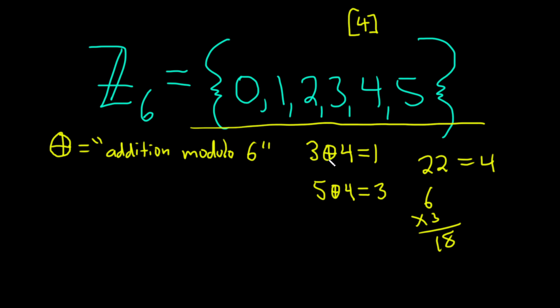But it also agrees with common sense division, right? If you have 3 plus 4, you get 7. The remainder is 1 after 6 goes into it. 5 plus 4 is 9, the remainder is 3 after 6 goes into it. So this is called addition modulo 6.